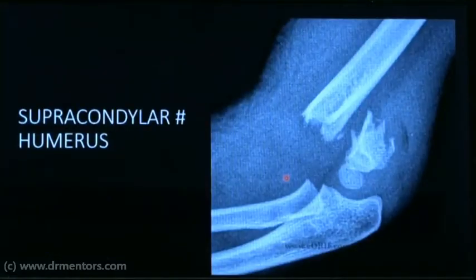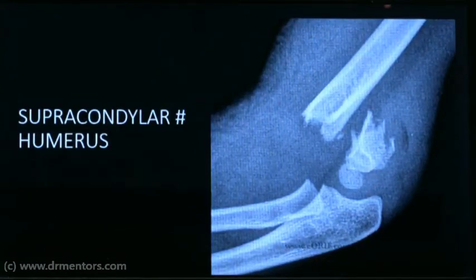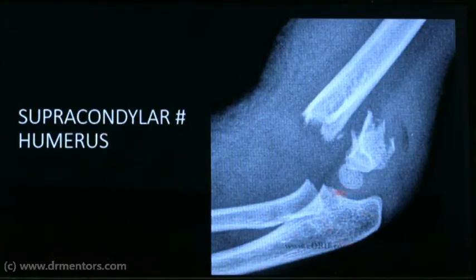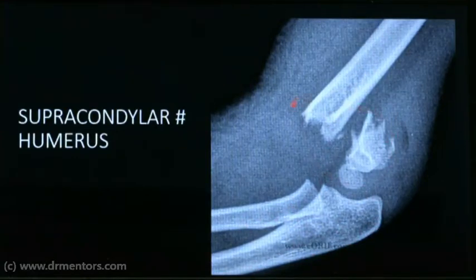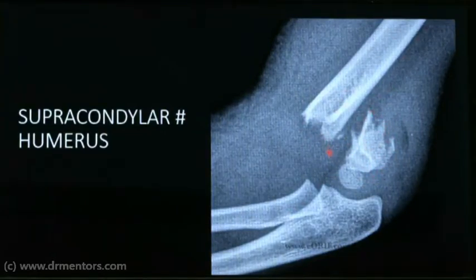This is a lateral X-ray of the elbow. The humerus, radius, ulna, and olecranon process are visible. We see a break in the lower humerus where the condyles are separated from the shaft — that is a supracondylar fracture of the humerus.